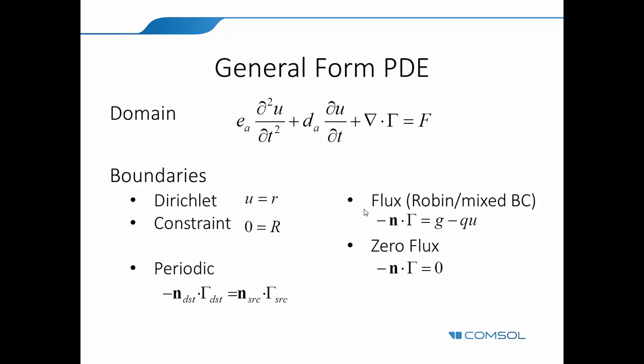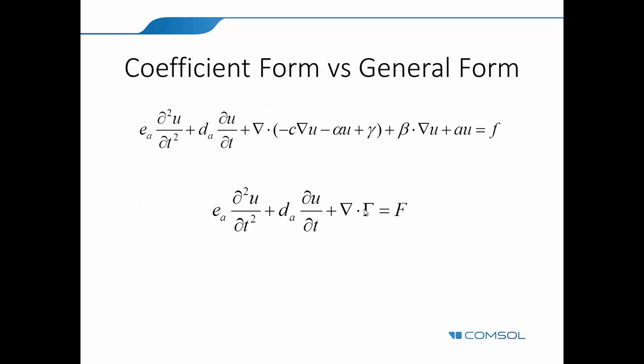And then the same templates, you have templates for boundary conditions. So let's see how this will fit. If you compare, for example, the general form template and the coefficient form template, the coefficient form, if you have a source term, I mean an absorption term like AU, for example, there isn't really a way to put that term in the general form, right? But what can you do?